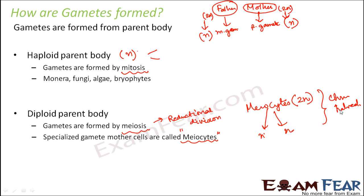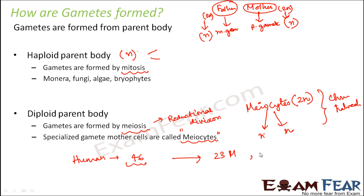If you have forgotten what mitosis and meiosis are, please refer to the videos on cell division from class 11. In human beings, the chromosome number in all body cells is 46. The meiocyte will also have 46 chromosomes. The male and female gametes will each have half — that is, 23 chromosomes. These two gametes combine to form the zygote, which is again diploid with 46 chromosomes.